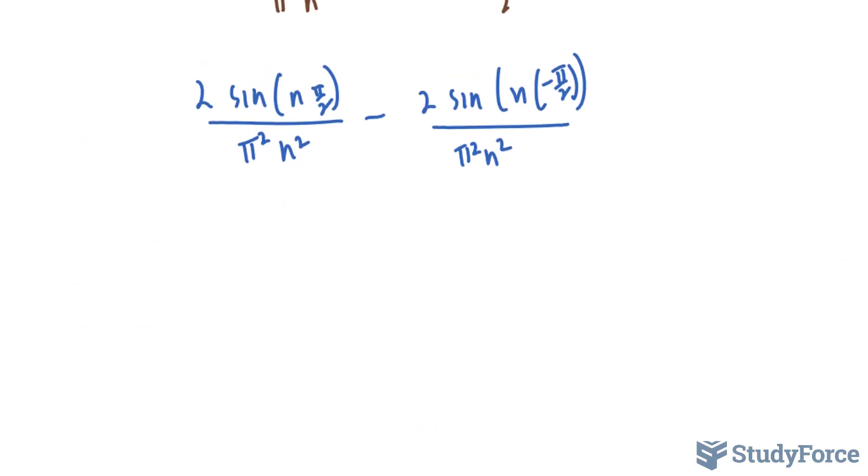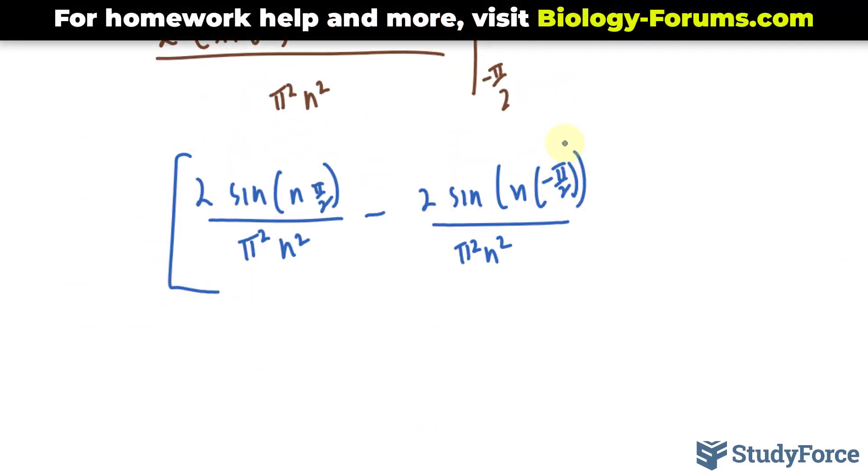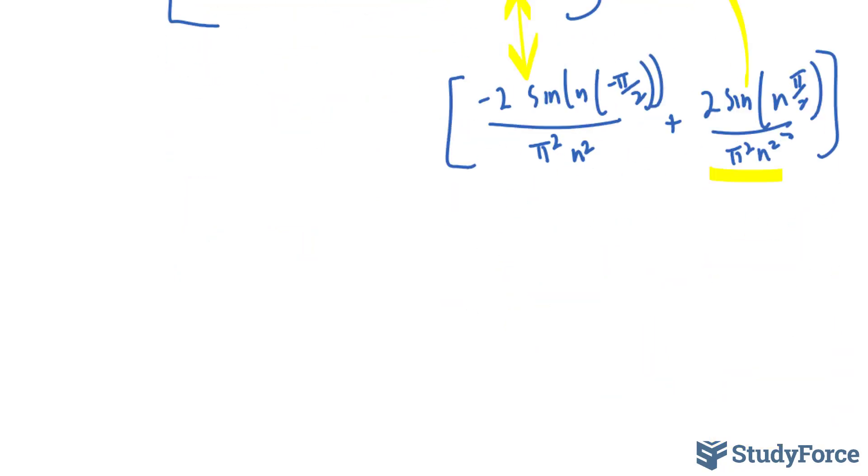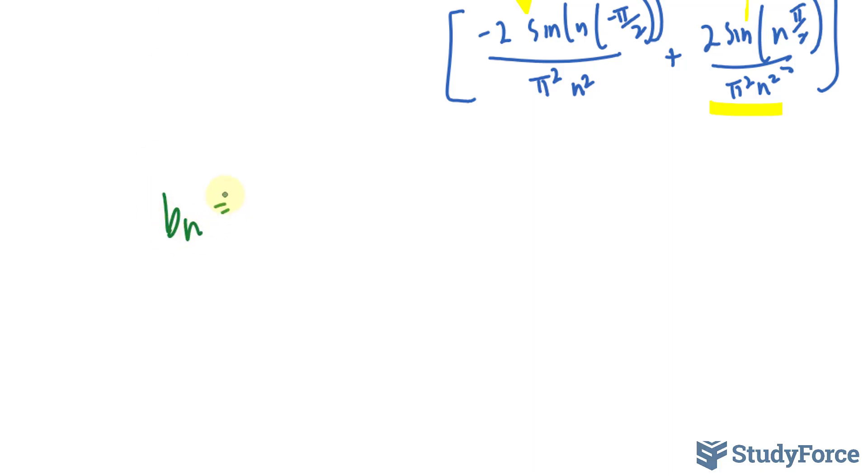And for the second part, it should look like this, where all of this is being added to the second integral, which is shown on your screen now. You'll notice something interesting here. This term and this term are like terms, and these two terms are like terms. So we can combine them together, giving us our final b_n general formula of 4·sin(nπ/2) / (π²n²) - 4·sin(-nπ/2) / (π²n²).